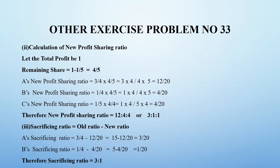The sacrificing ratio is used to split the goodwill amount and distribute it. We use the new profit sharing ratio. Once we know the new partner's capital and the existing partner's capital, we can find the adjusting partner's capital. For that, the new profit sharing ratio will help.